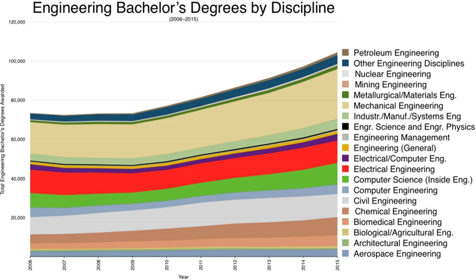Engineering degrees in Canada are distinct from degrees in engineering technology, which are more applied degrees or diplomas. An engineering education in Canada is held in very high esteem, culminating in qualifying as a professional engineer licensee. Many graduate engineers enter other areas of professional practice including management consulting, law, medicine, and business administration.